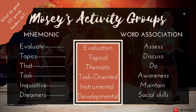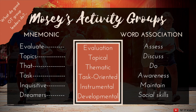Let's walk through a few helpful notes to make remembering these groups easier. Here is a visual summary of Mosey's six types of activity groups. A mnemonic that might help remember the names: 'What do good OT group leaders do? They evaluate topics that task inquisitive dreamers.' That maps to: Evaluation, Topical, Thematic, Task-oriented, Instrumental, and Developmental. Most of these line up nicely, except perhaps thematic and inquisitive.